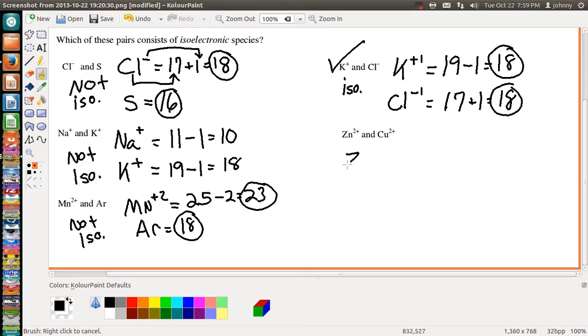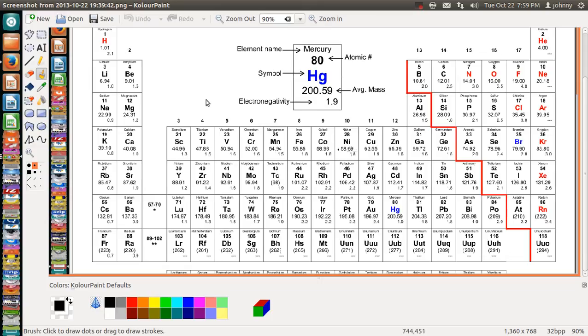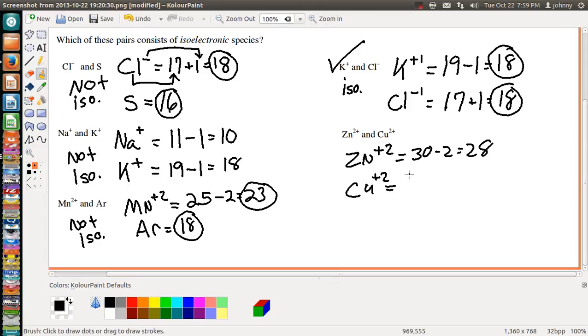Zn²⁺. If you have Zn here plus 2, Zn itself, just neutral, has 30 electrons. But with plus 2, you have to lose two electrons. That gives you 28. Now let's look at Cu. Cu²⁺, you look at it, Cu is 29 if it's neutral. And the plus 2 means you need to lose two. So these two right here gives you 27. These are off by one. So this is also not isoelectronic.